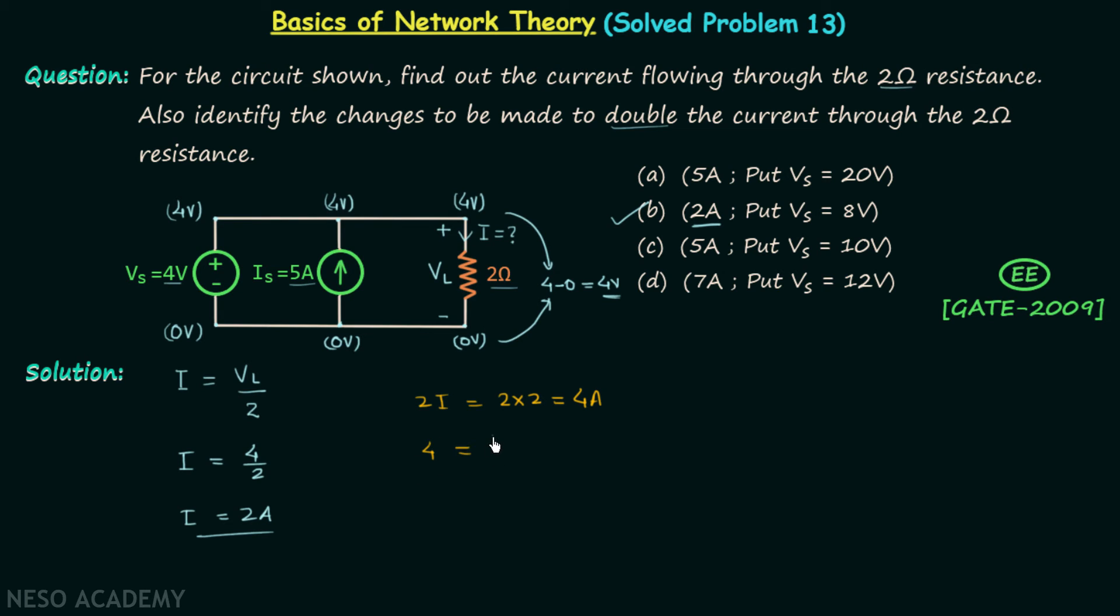So current through the resistance is equal to four amperes and the voltage across it is equal to VL which is equal to four times two. From here we are getting Vs equal to four multiplied by two that is eight volts. So Vs is equal to eight volts.